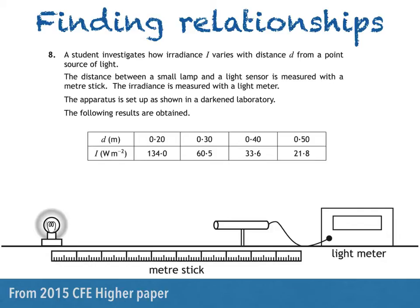Here's part of a question from the 2015 CFE Higher paper. A student investigates how irradiance I varies with distance d from a point source of light. The distance between a small lamp and a light sensor is measured with a meter stick. The irradiance is measured with a light meter. The apparatus is set up as shown in a darkened laboratory. The following results are obtained.